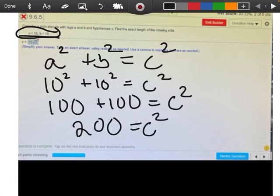Remember, I'm trying to solve for the letter C. If I have it being squared, I have to do the opposite, which is to take the square root on both sides.